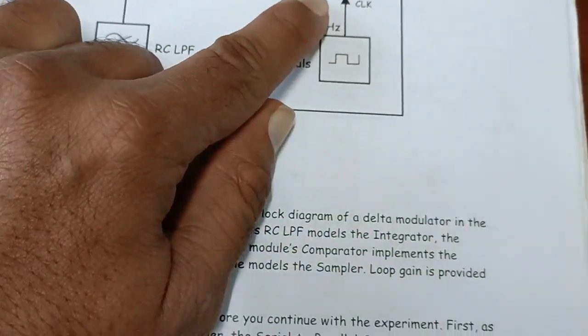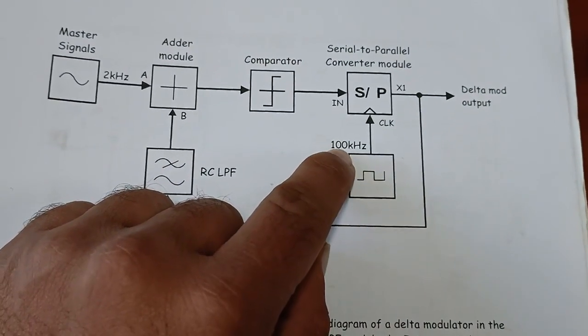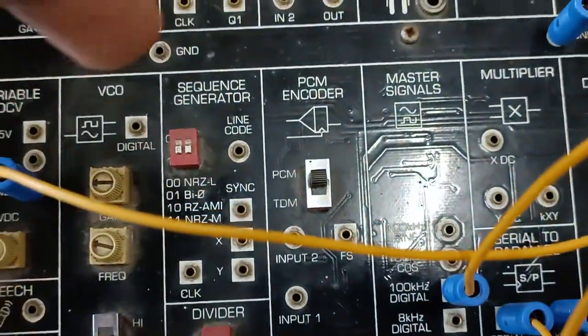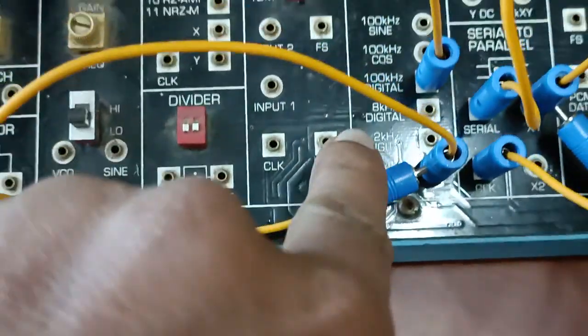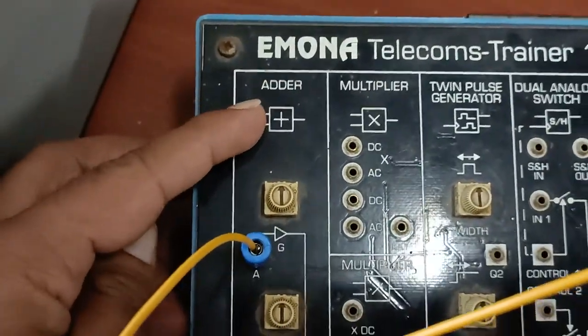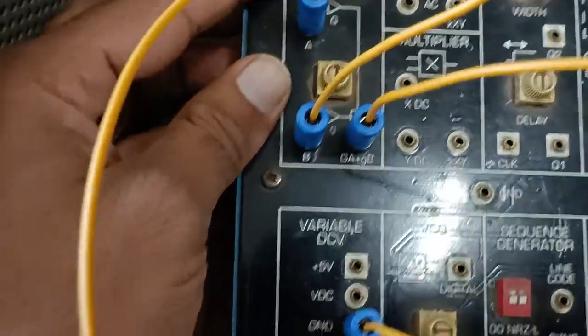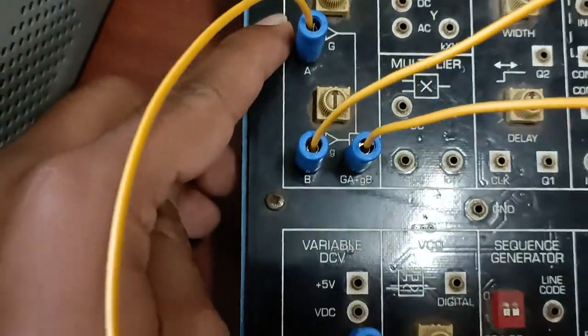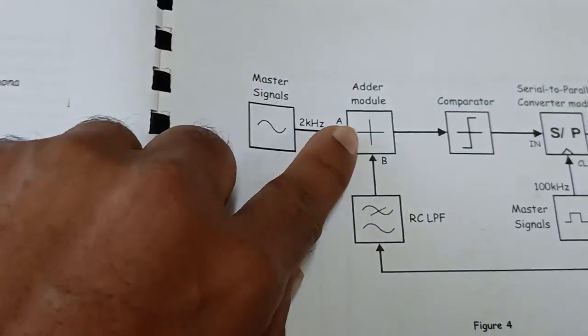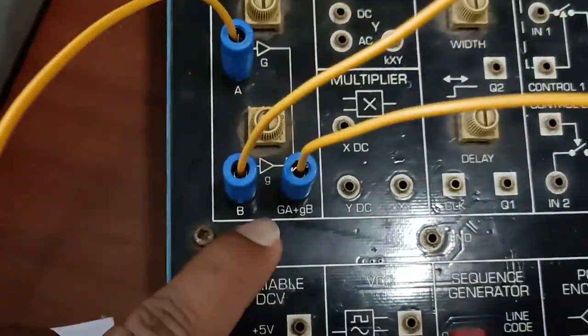The serial-to-parallel converter circuit uses a clock frequency of 100 kHz to convert serial to parallel. The master signal is a 2 kHz sinusoidal signal, and this is fed to the adder. When both switches are at the middle, I have given the first signal to the adder, then the output of the adder is given to the comparator.